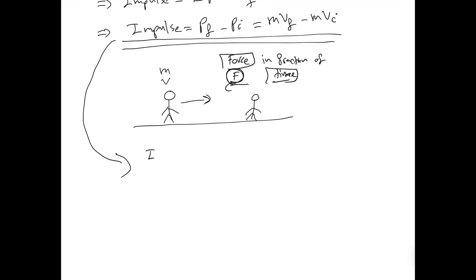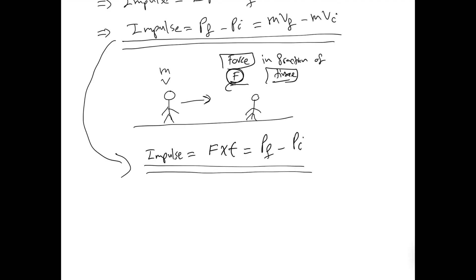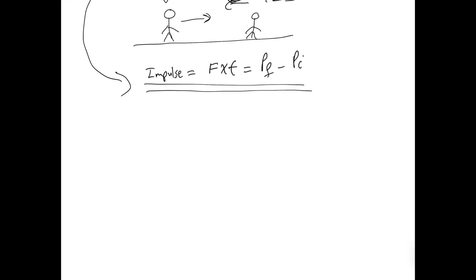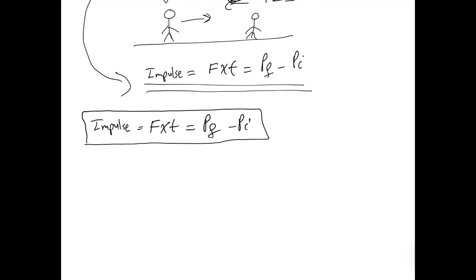Impulse also equals that force multiplied by the time it took to apply the force, which also equals the change in momentum. This is the expanded representation of impulse: force multiplied by time equals the change in momentum. Whether you have force and time, or mass and initial and final velocities, both approaches allow you to calculate the impulse.